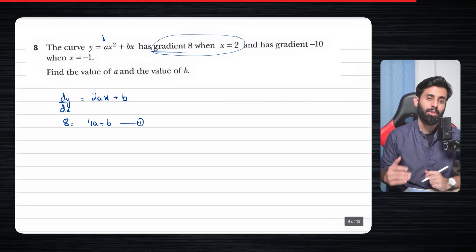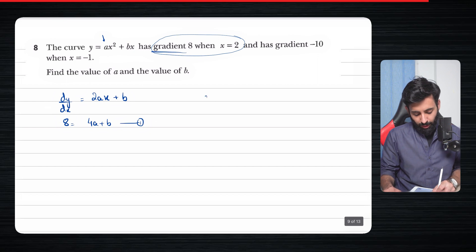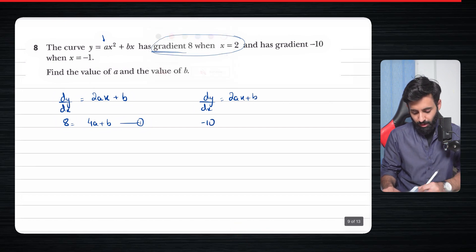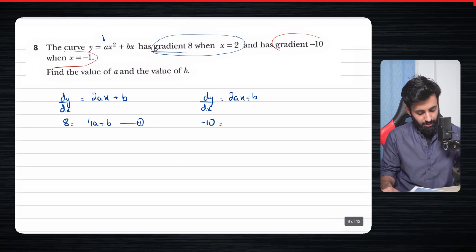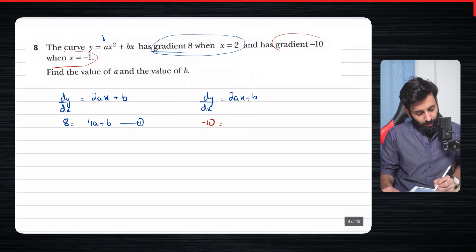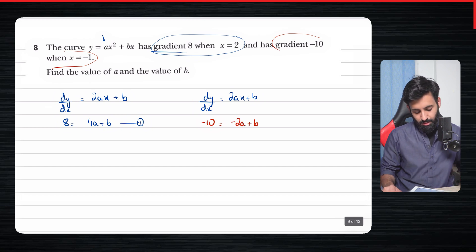So you can see that we now have one equation, which is clearly insufficient to find the value of a or the value b. So let's rewrite dy/dx, which is 2ax plus b. This time, we're going to use these set of values: gradient minus 10 when x is minus 1. So we're going to replace dy/dx by minus 10, and the value of x is minus 1. So this becomes 2 into a into minus 1, which means minus 2a plus b.